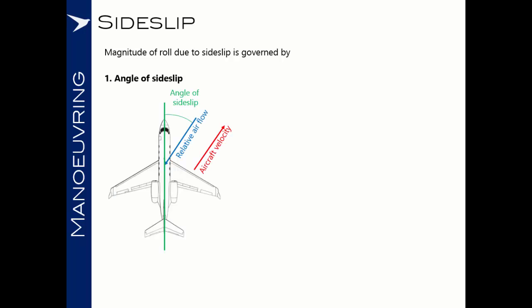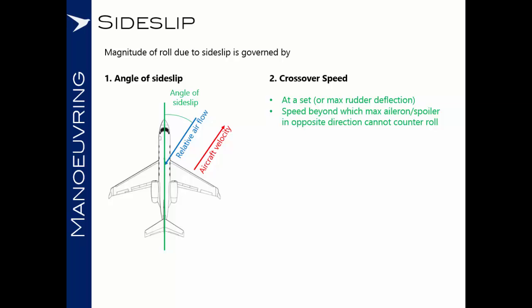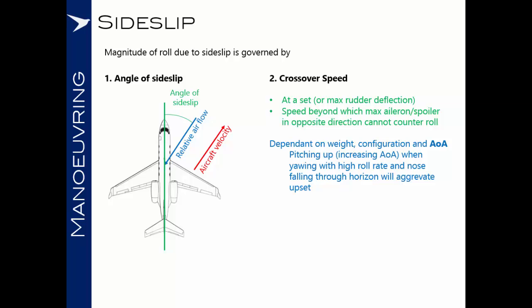The roll rate in a sideslip can be potentially very large. It is governed by: first, the angle of sideslip between the relative airflow and the longitudinal axis; second, the crossover speed — at a set rudder deflection, there will be a speed at which maximum aileron or spoiler in the opposite direction cannot counter the yaw-induced roll. This is dependent on weight, configuration, and importantly angle of attack. For upset recoveries, if we are yawing with a high roll rate while pitching up and increasing angle of attack, we will aggravate the upset. Therefore, the rudder should be neutral before we increase any angle of attack.